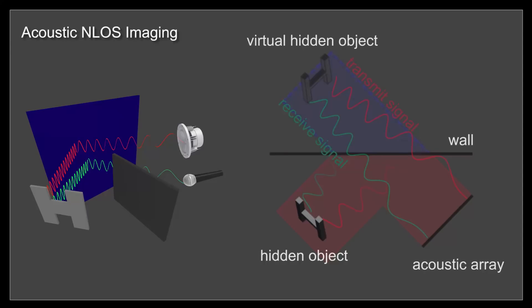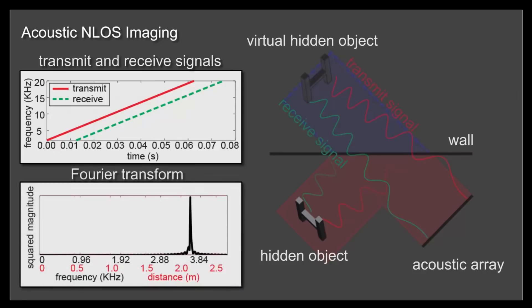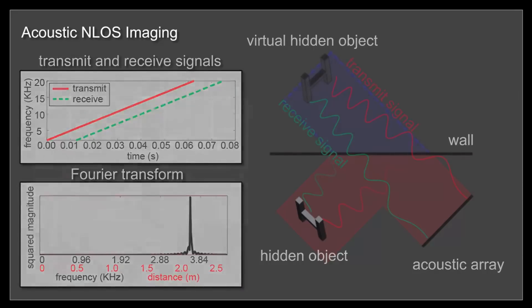Unlike the optical case, there are no focusing optics for acoustics, so we cannot directly measure an image of the virtual scene. Instead, we use an array of speakers and microphones. Each speaker emits a linear frequency sweep, and each microphone captures delayed versions of the signal reflected off the scene. Mixing the transmit and receive signals produces peaks in the Fourier domain corresponding to the distance of the scatterers.